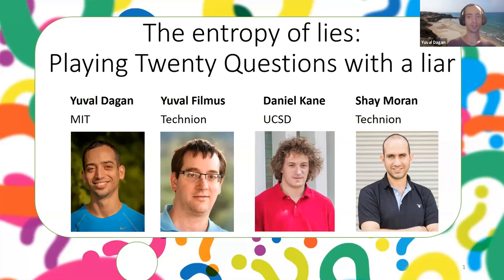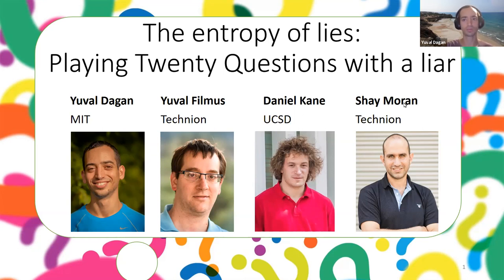Hello, my name is Yuval Dagan and I will present a joint work with Yuval Filmus, Daniel Kane, and Shai Moran. It is called 'The Entropy of Lies: Playing 20 Questions with a Liar.'